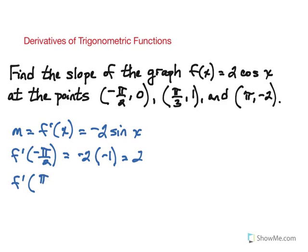Now we are going to find the derivative at the x value π/3. So we have -2 times the sine of π/3. Remember that's going to be √3/2, so there we have -√3.